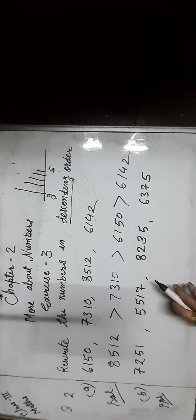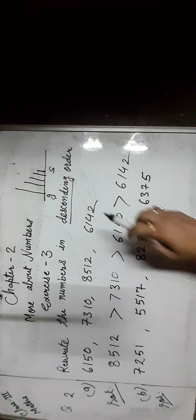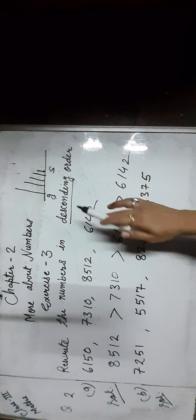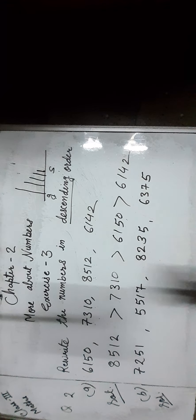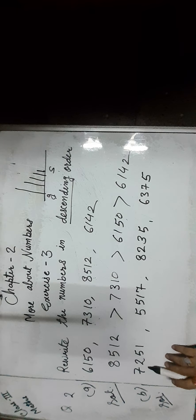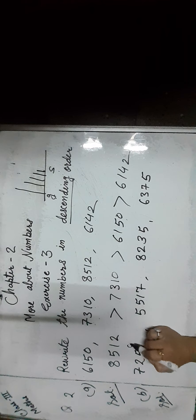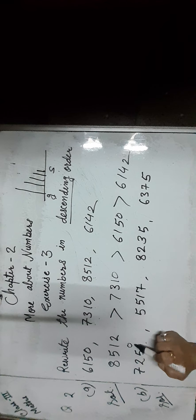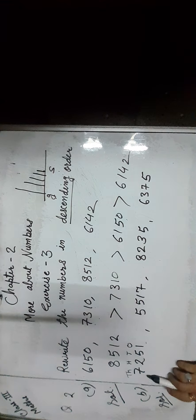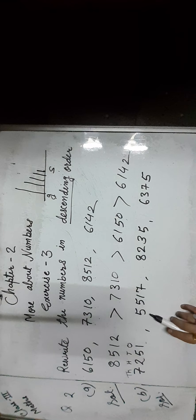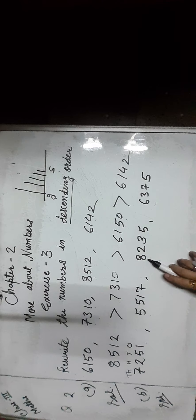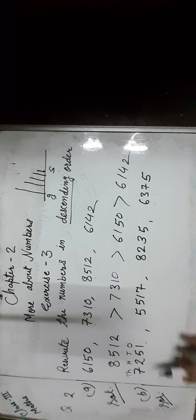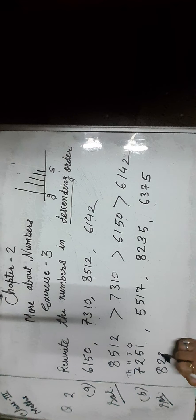Now we write the numbers in descending order again. Descending means coming down from greatest to the smallest. First we check the number of digits — all numbers have 4 digits. We find the place value of each digit: 1s, 10s, 100s, and 1000s. First we compare the 1000s place digit: that is 7, 5, 8, 6. Since 8 is greater than 6, 5, and 7, we move with 8,235 first.